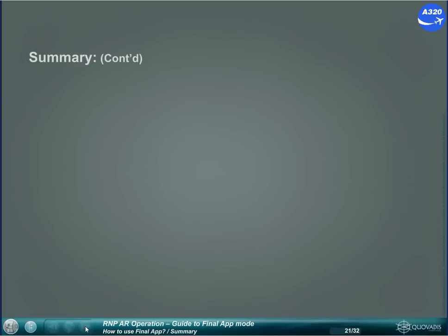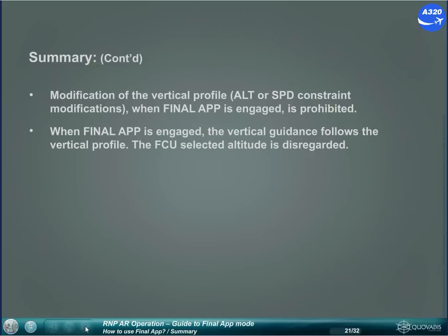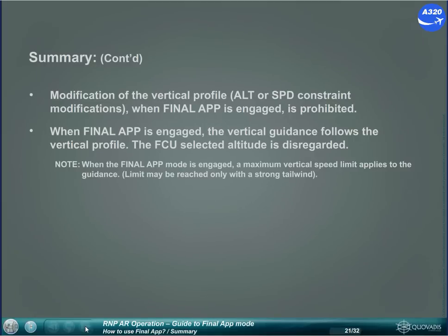Summary continued: Modification of the vertical profile — altitude or speed constraint modifications — when Final Approach is engaged is prohibited. When Final Approach is engaged, the vertical guidance follows the vertical profile. The FCU selected altitude is disregarded. Note: when the Final Approach mode is engaged, a maximum vertical speed limit applies to the guidance. This limit may be reached only with a strong tailwind.